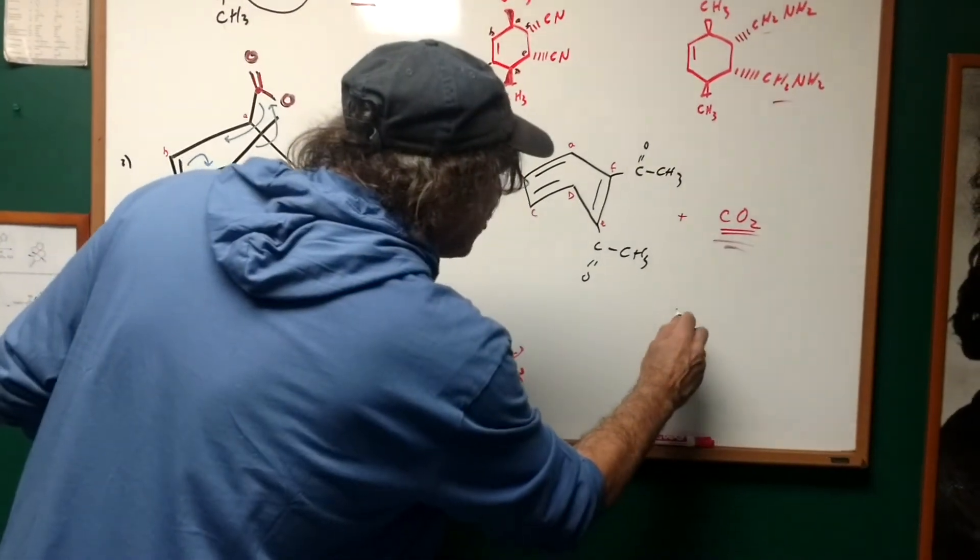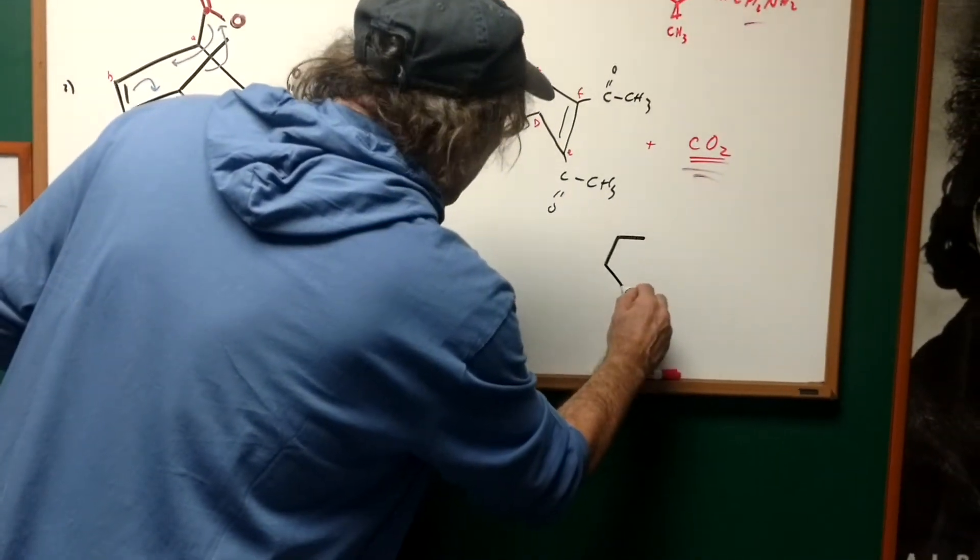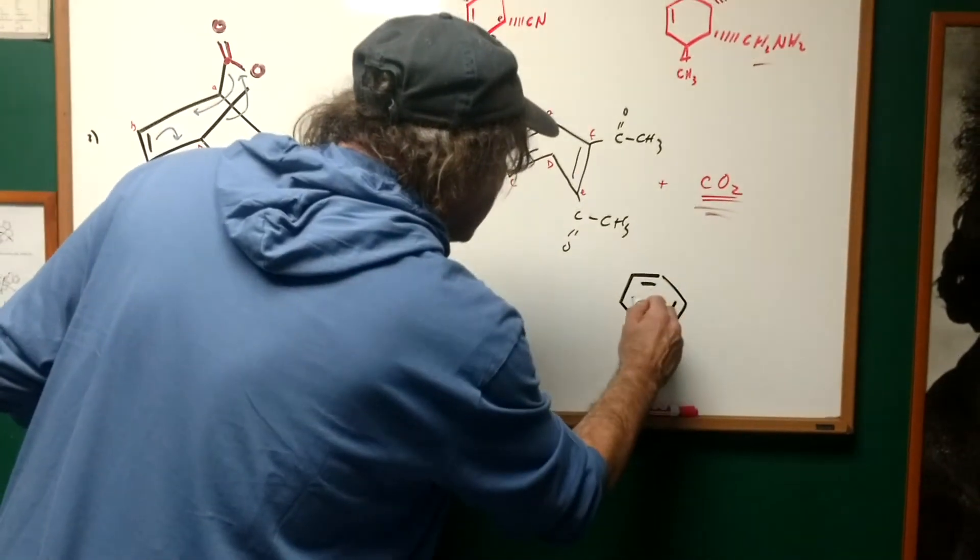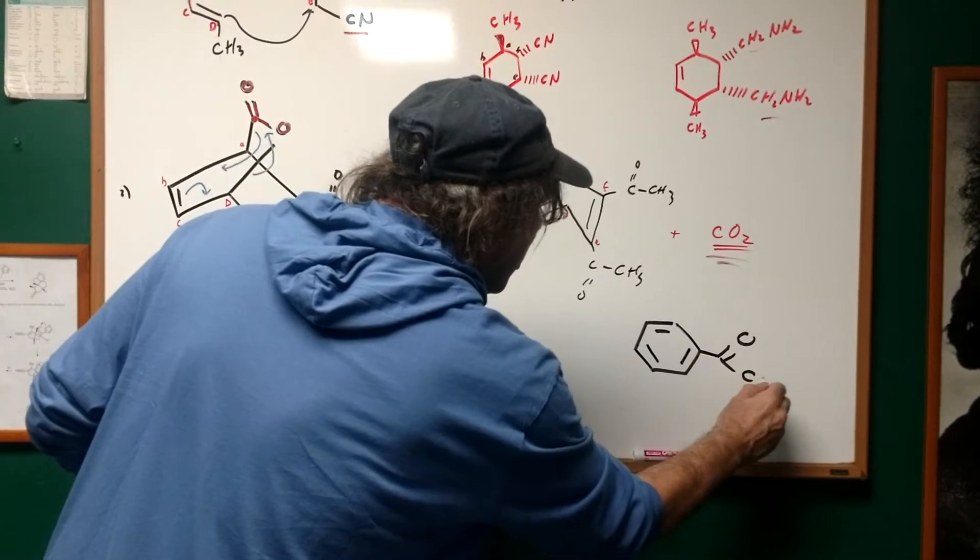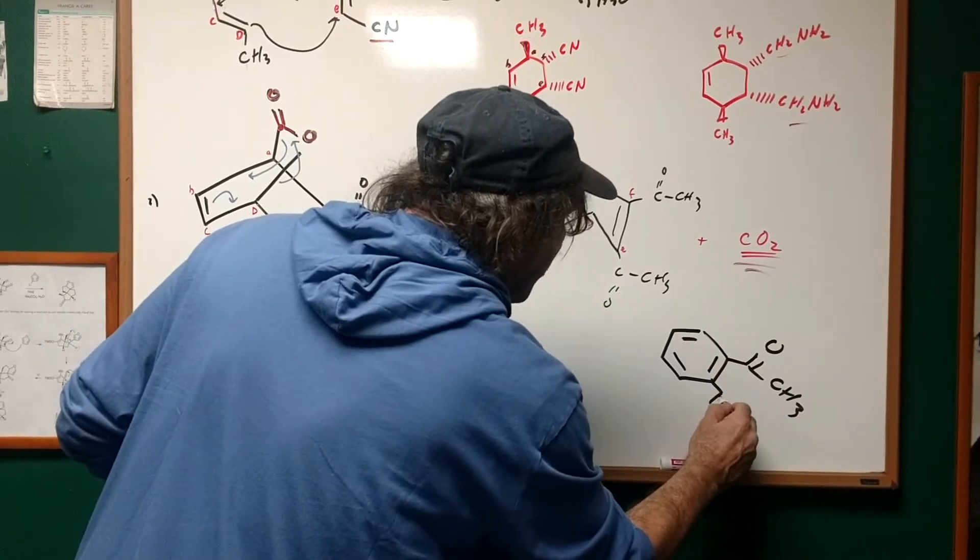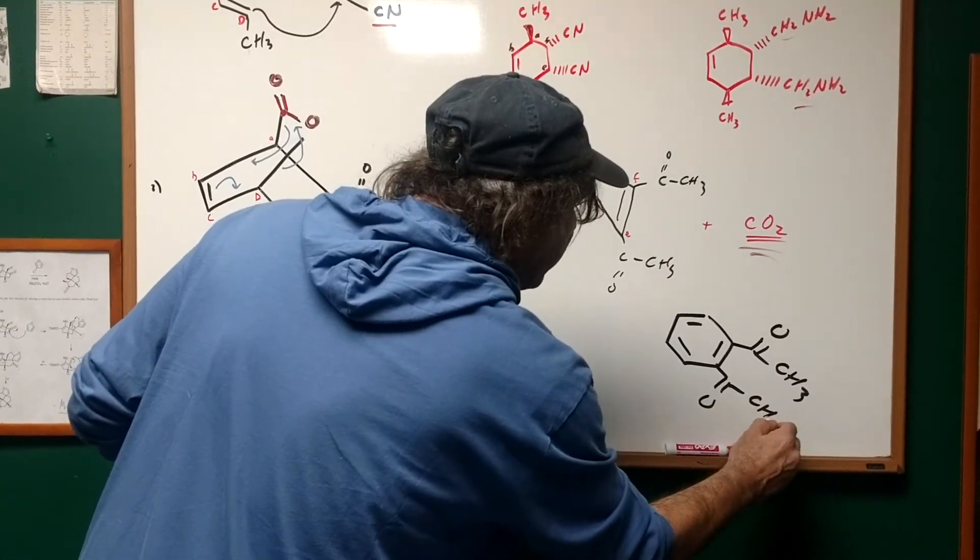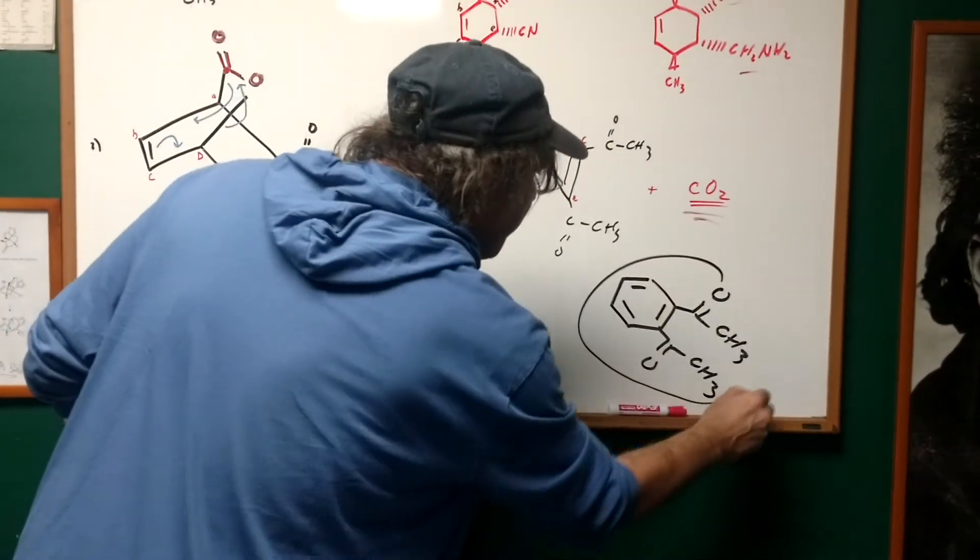If you want to just make it look pretty at the end, all I would simply do is I would make this into a nicer six-membered ring and keep all the substituents as shown, and that would be the final product.